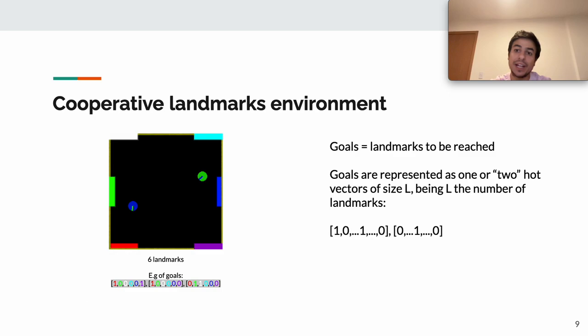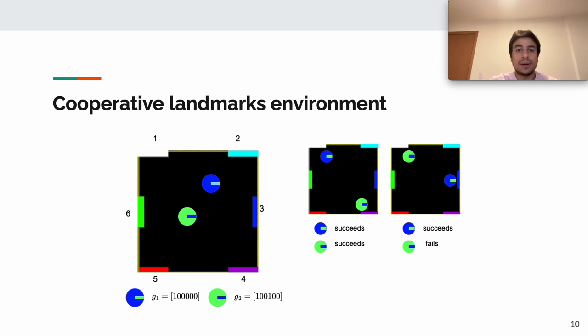In this setting, goals are vectors of dimension L that can be either one hot or two hot, where a one in coordinate i of the vector indicates that landmark i needs to be reached by at least one agent for this goal to be achieved. In this slide, we illustrate an example of two possible goals for a pair of agents in two cases: the left one in which both agents succeed and the one on the right in which the green agent fails while the blue succeeds. In all of our experiments, each agent learns a goal conditioned policy using PPO with a feed-forward policy and uniform goal sampling distribution.